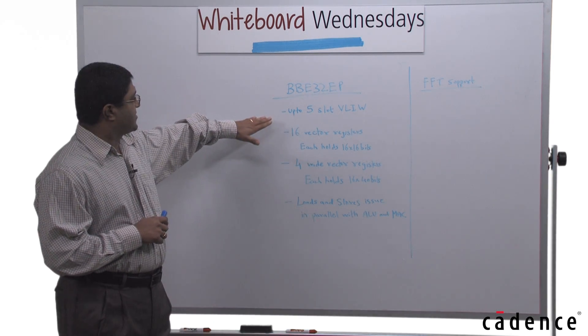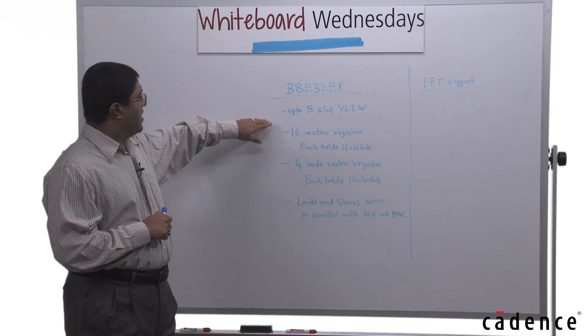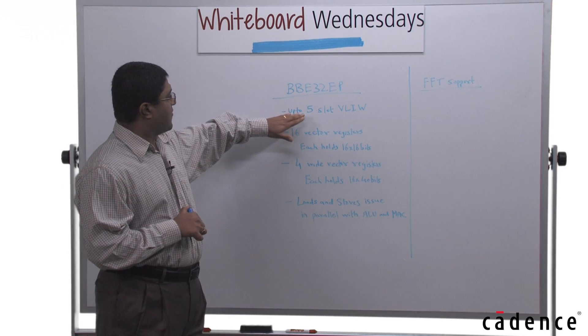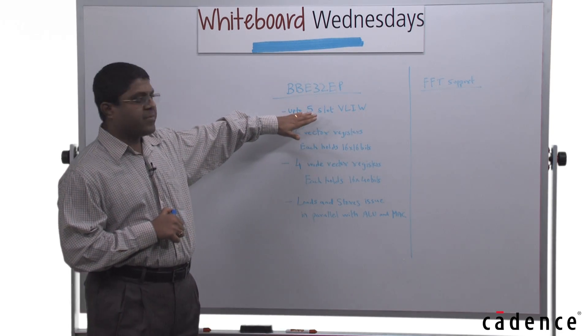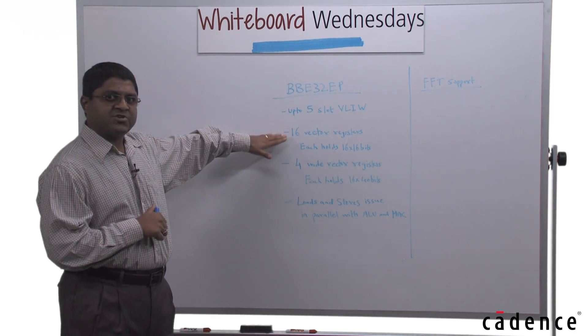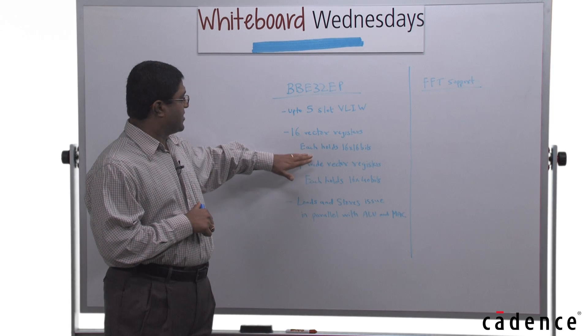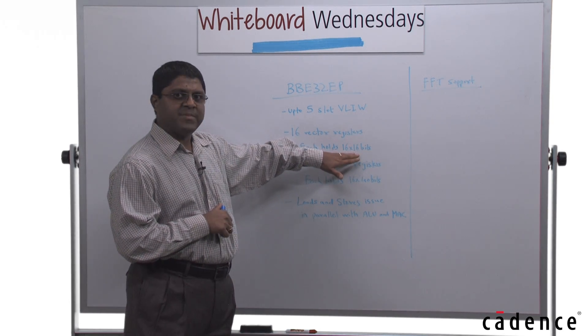Let us take a quick look at the features of the BBE32EP DSP. It is a 5-slot VLIW machine, so it can issue up to 5 operations in an instruction bundle. It has 16 vector registers. Each vector register holds 16 elements of 16 bits each.